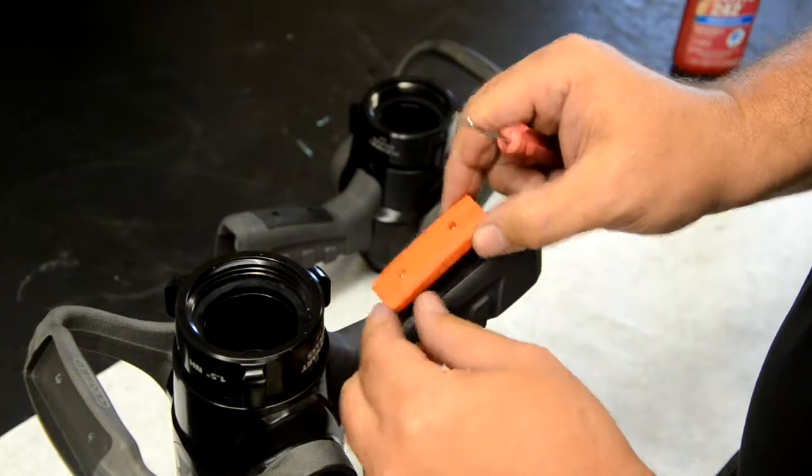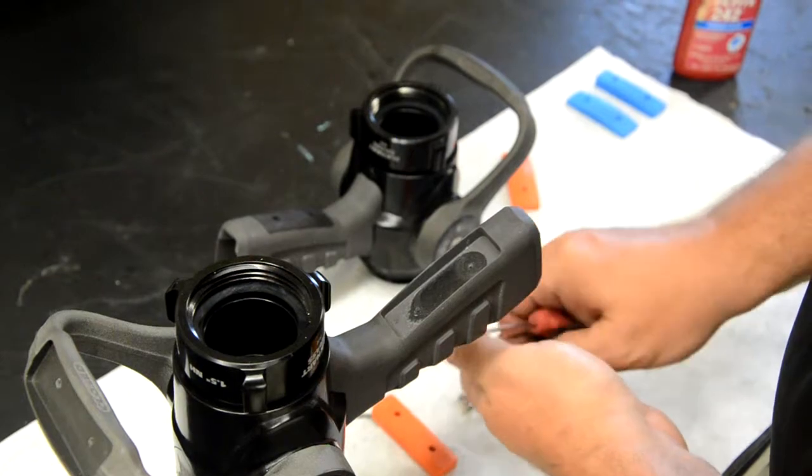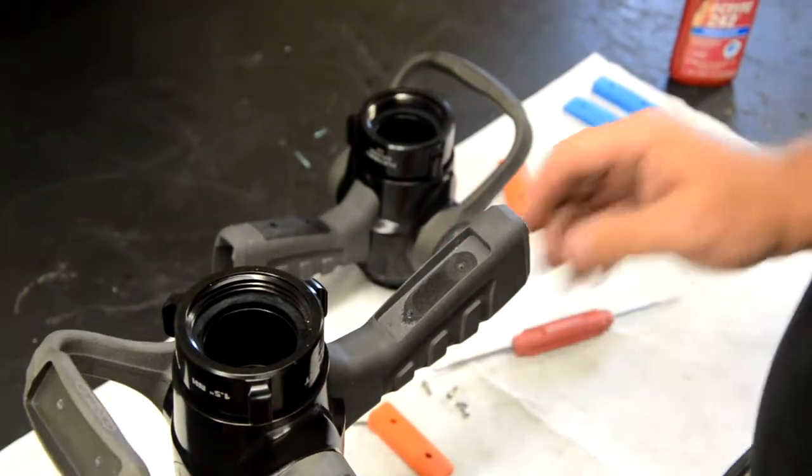Be sure to note the orientation of the pistol grip insert, as it's wider on one end. The bail handle insert, on the other hand, is symmetrical and can be inserted in either direction.